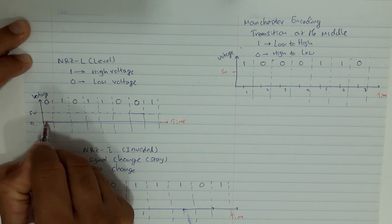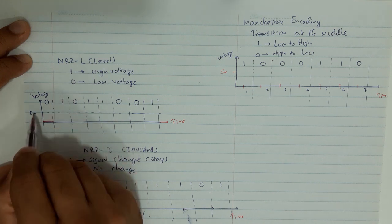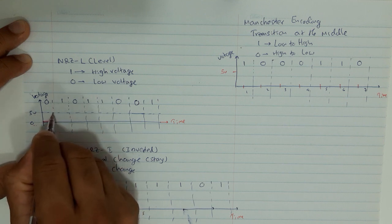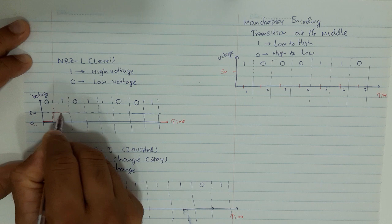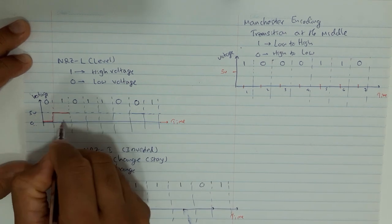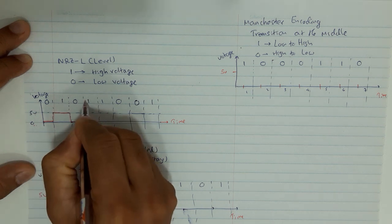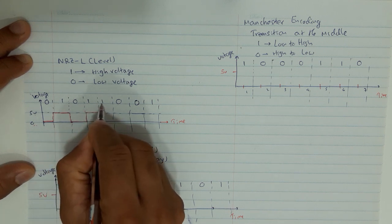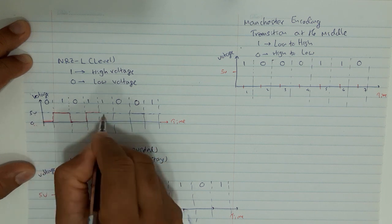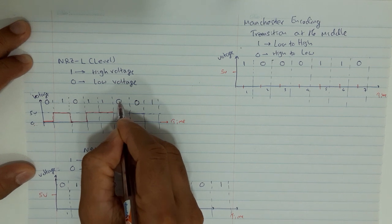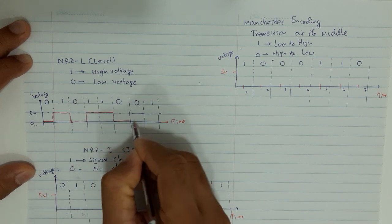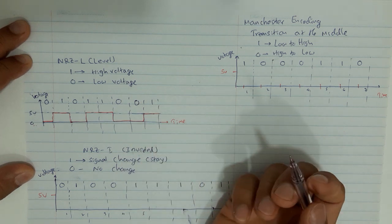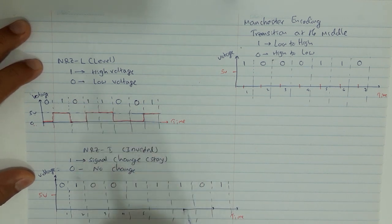Since 0 is a low voltage, I draw the first bit with 0 voltage. Then 1 is 5 volts, so I rise up to 5 volts. That time interval for bit 1 is at higher voltage. Then 0 is low voltage, so I come down to 0 voltage. Again 1 goes up to 5 volts, another 1 continues at 5 volts, then 0 goes down, 0 stays at 0 voltage, and 1 rises back up. This is NRZ-L.